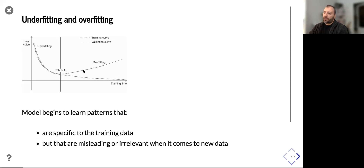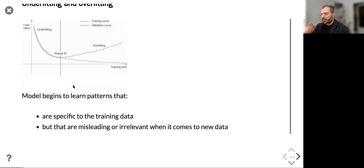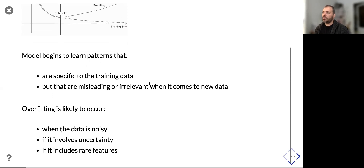When we start overfitting, the model learns patterns that are very specific to the training data but are misleading or not relevant for new data. Overfitting is likely to occur in one of three cases: noisy data, uncertainty, and rare features. These are some of the most common cases where the data is responsible for the overfitting.